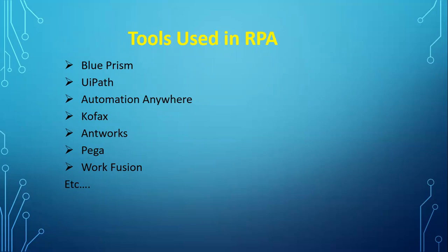You need to understand the limitations and set clear expectations with the client. Once a project is signed with the customer, the business analyst is the first person to jump into the next stage. When the client has agreed to automation and the RPA team is ready for implementation, the BA takes on the requirement gathering activities.